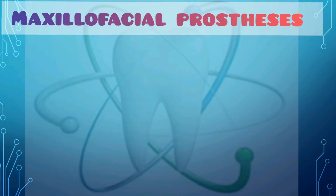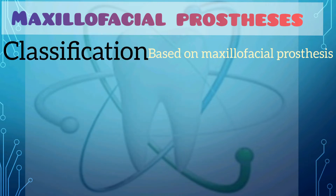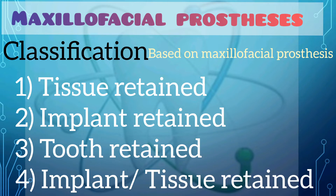The maxillofacial prostheses are divided into four types: tissue retained maxillofacial prosthesis, implant retained maxillofacial prosthesis, tooth retained maxillofacial prosthesis, and implant or tissue retained maxillofacial prosthesis.